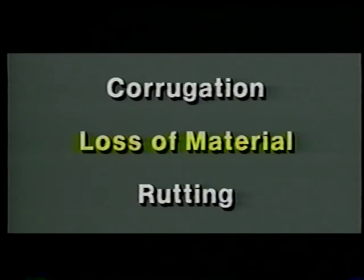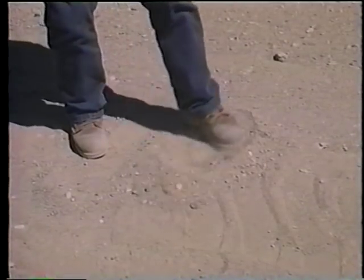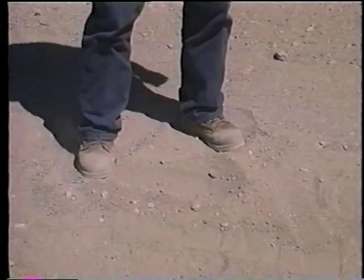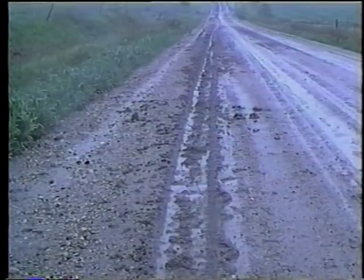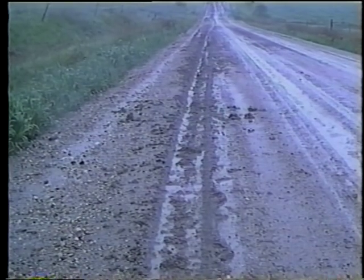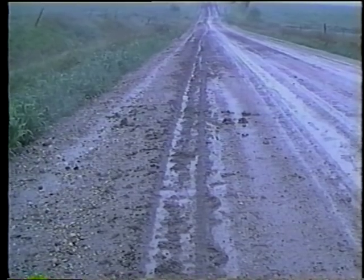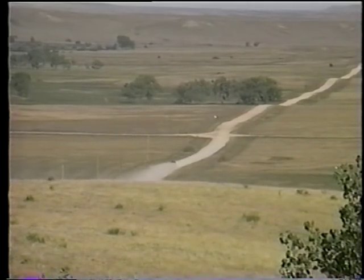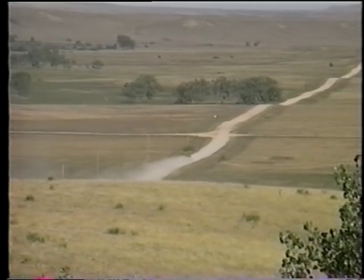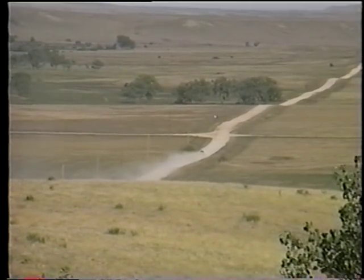The next problem is loss of material — aggregate material that is either removed from or displaced within the roadway. Basically it can be lost in three ways: by dusting away, by raveling, and by a process called sinking. Dust is created by dryness, whether it's an arid region, a dry season, or just a rainless spell of weather. All gravel roads produce some dust in dry conditions.